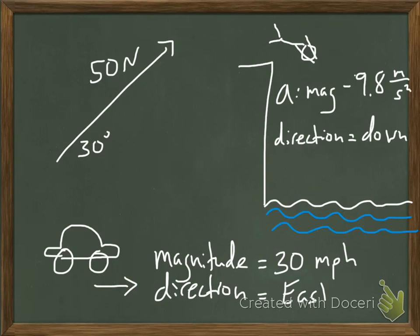The direction of your speed would be something like east. So the magnitude refers to the value of the vector, or the measurement. And the direction refers to the angle, or the up, or the down, or the north, or the south, or the right, and the left.